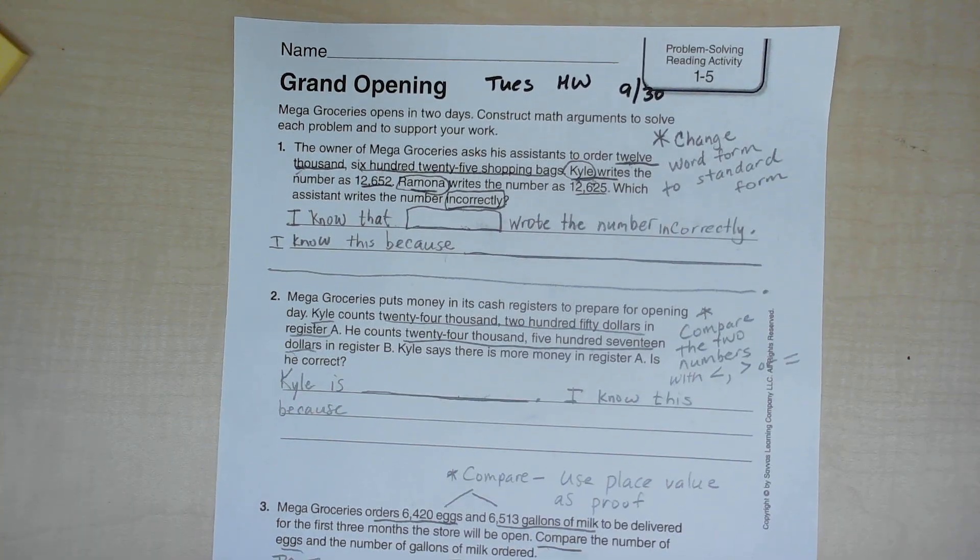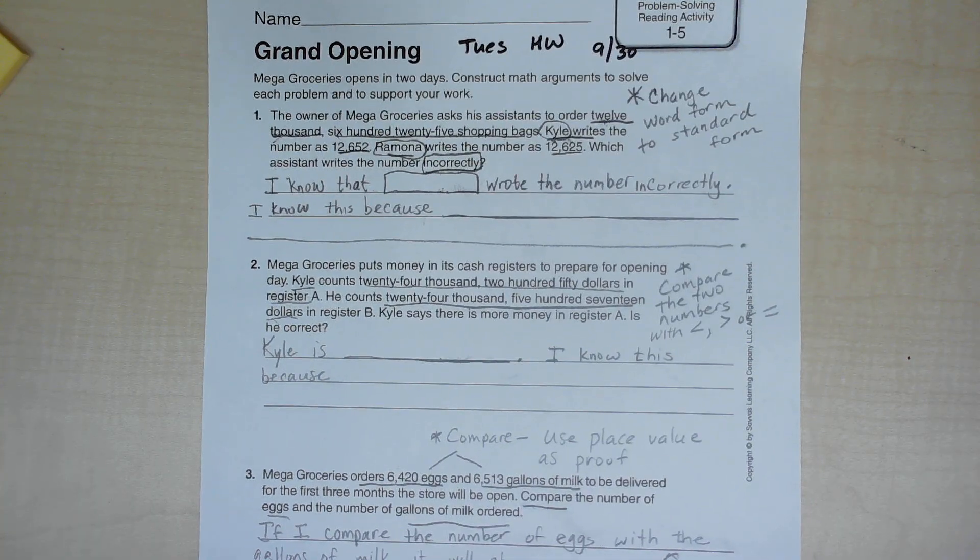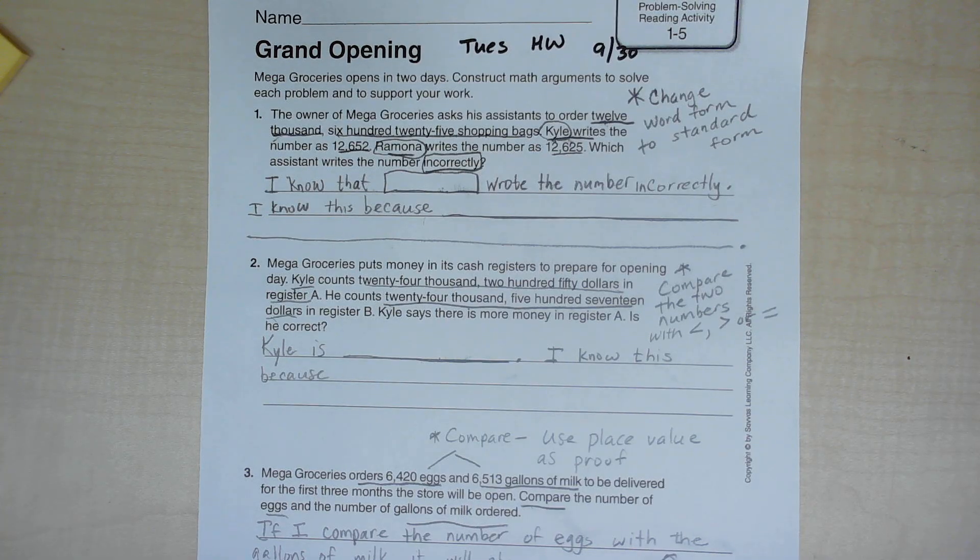Number two: Mega Groceries puts money in its cash registers to prepare for opening day. Kyle counts twenty-four thousand two hundred fifty dollars in register A. He counts twenty-four thousand five hundred seventeen dollars in register B. Kyle says there is more money in register A.